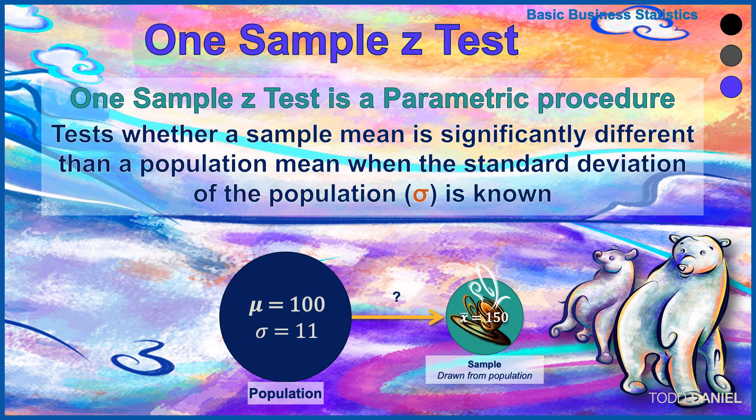Using our example with the polar bears, the population of polar bears walks an average of 100 miles per week with a standard deviation of 11 miles. Our sample of highly caffeinated polar bears walks an average of 150 miles per week. We can use this sample statistic to compare whether it is statistically significantly different than that population parameter.